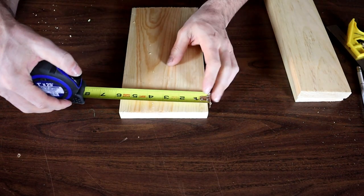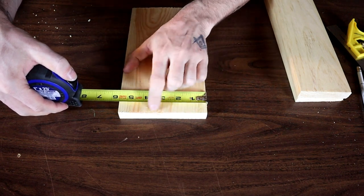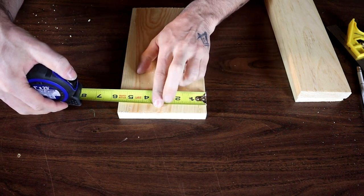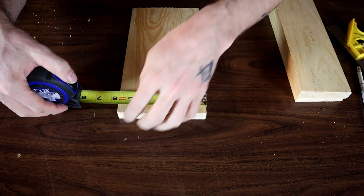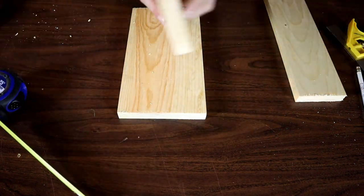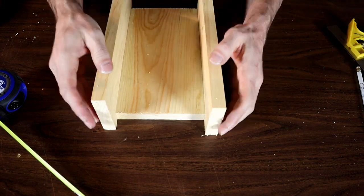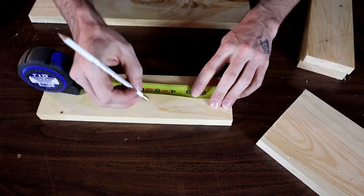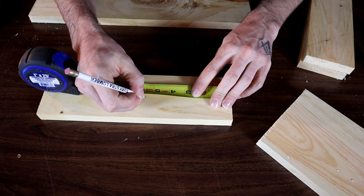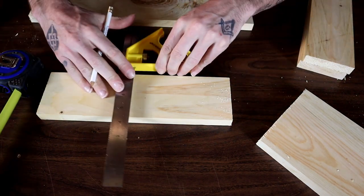To measure for your ends, it's going to be the exact width of the material you're using. This is Pine D4S, five and a half inches wide. So I'm going to cut two pieces at five and a half inches so they fit in between the two ends like that. Mark it and draw the line across.